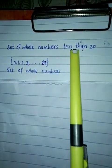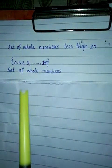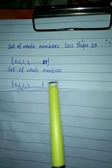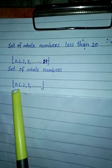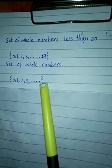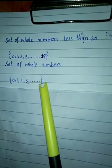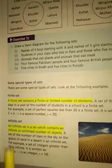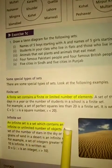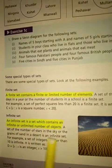دونوں میں فرق یہ ہے: 'set of whole numbers less than twenty' میں last number mention ہے، لیکن 'set of whole numbers' میں کوئی last number نہیں — elements unlimited ہیں۔ تو یہ infinite set ہے۔ اسے لکھیں گے: {0, 1, 2, 3, ...} — dots سے ظاہر ہوتا ہے کہ یہ continue ہے۔